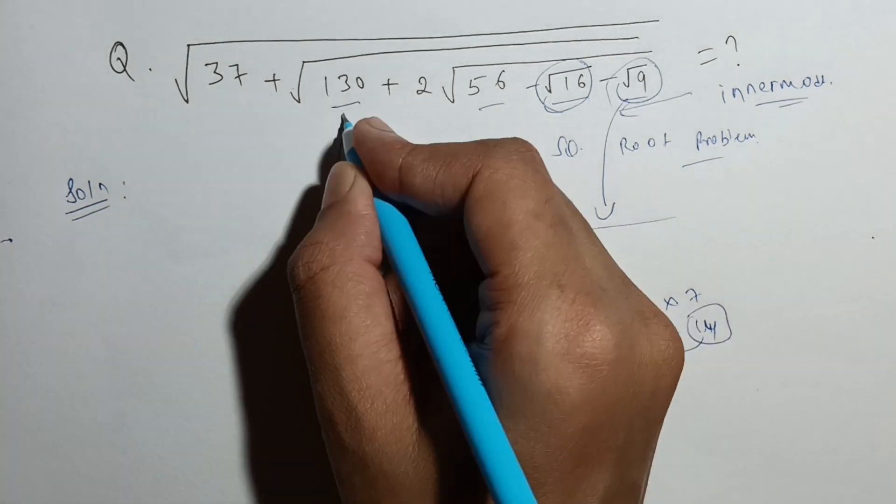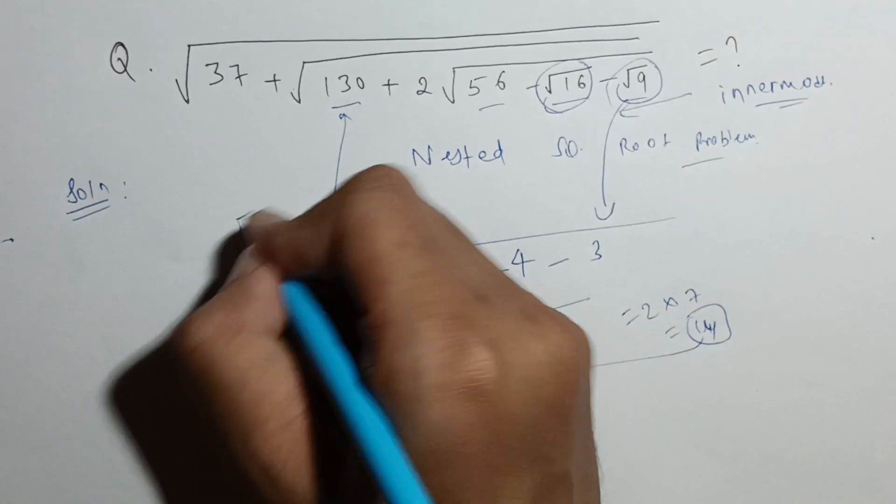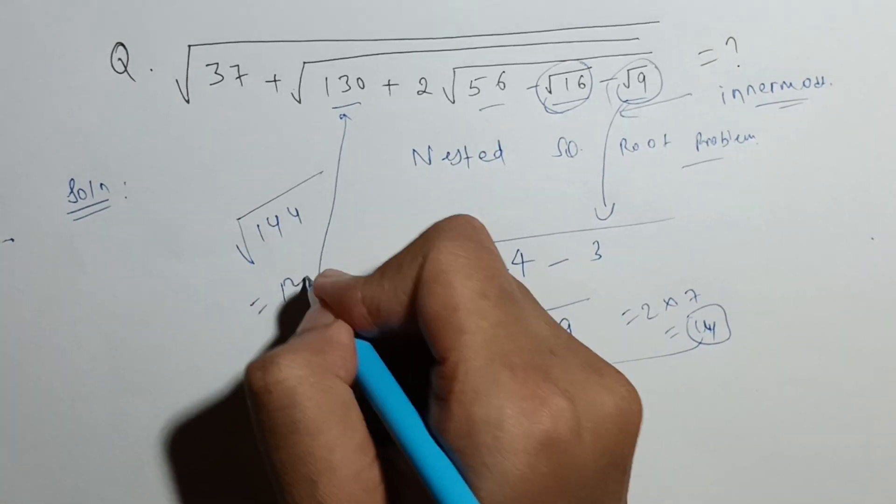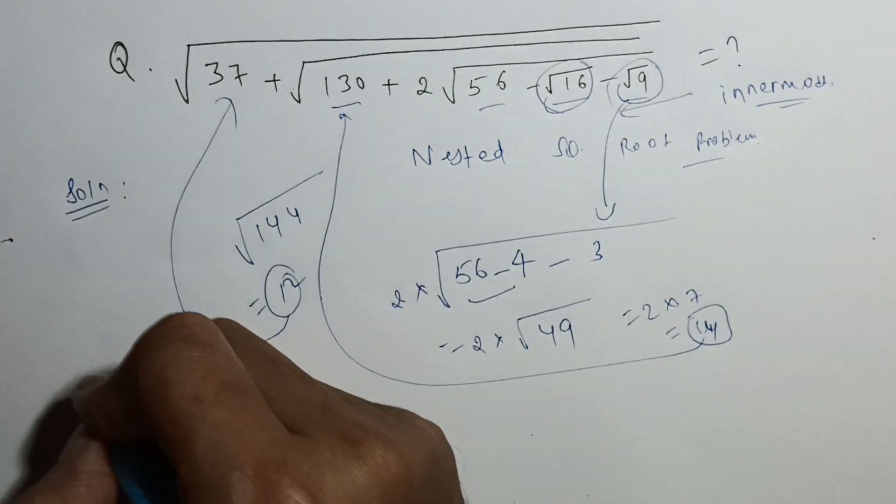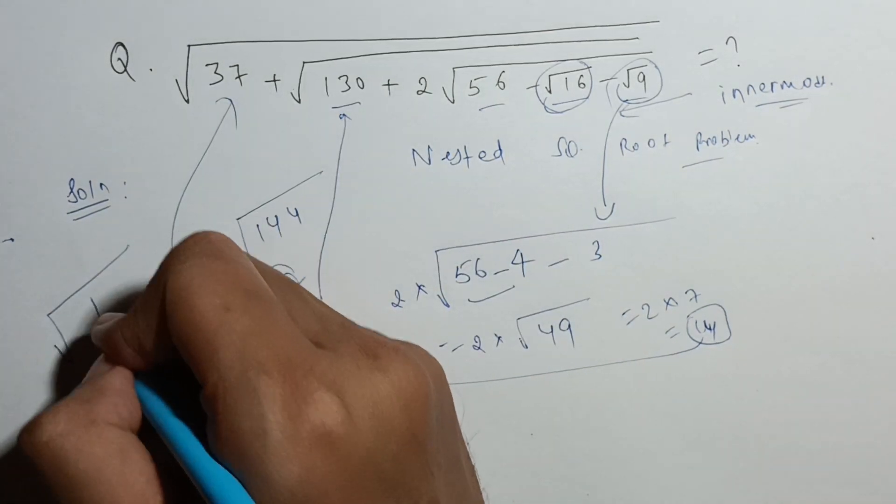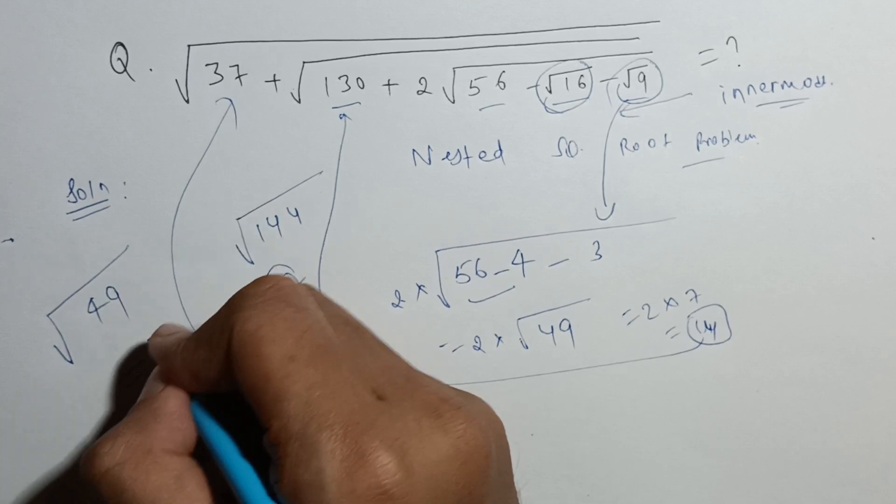Now 14 and 130, if I add them, I will get square root of 144, which is 12. And if I add 12 to this, I will get square root of 49, which is 7.